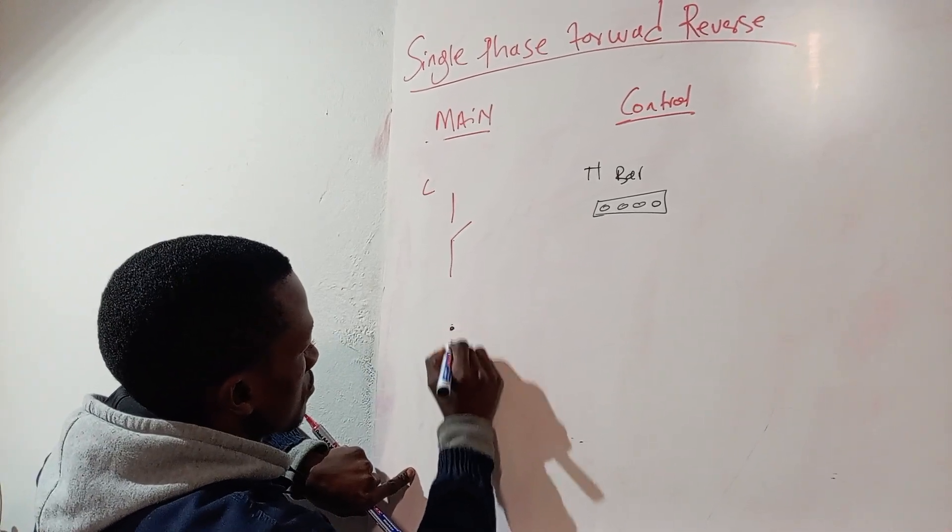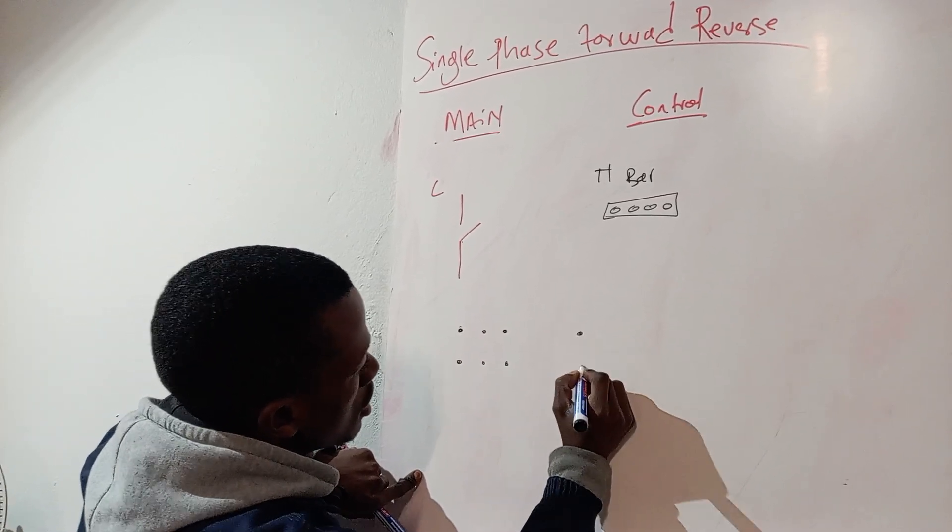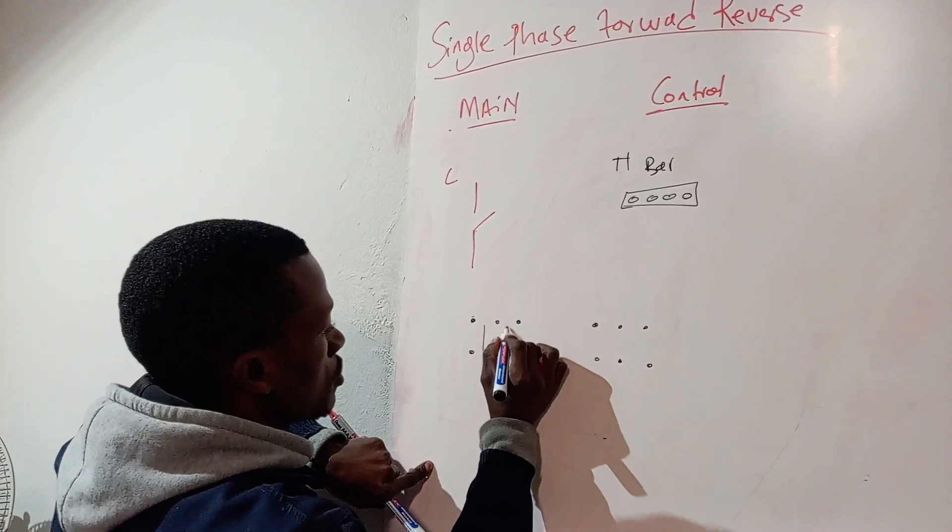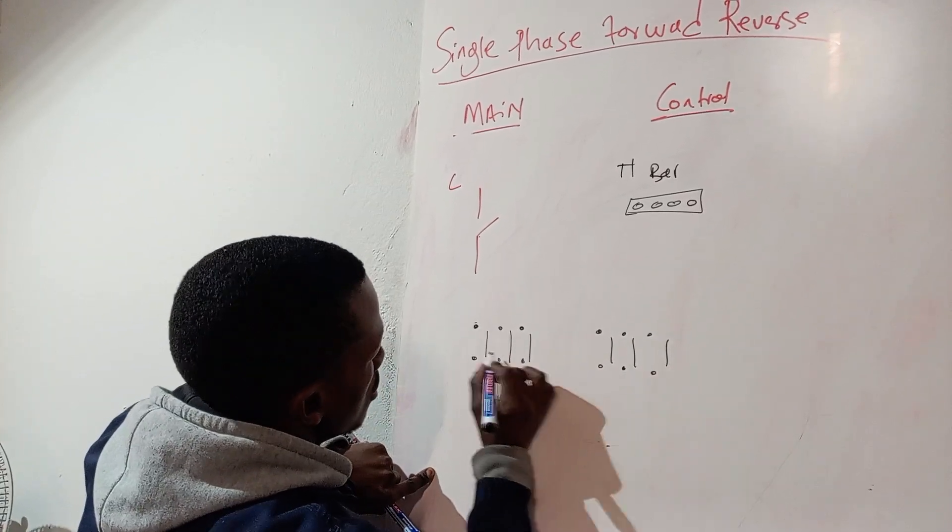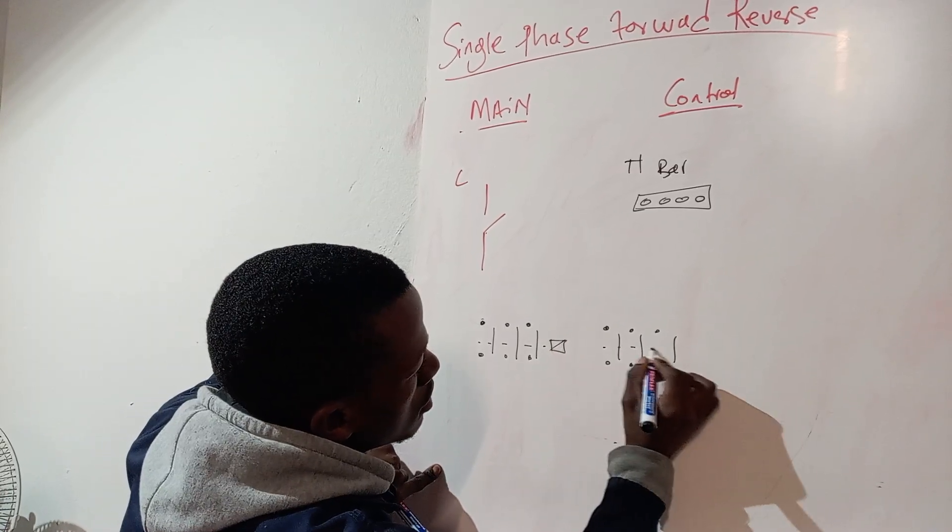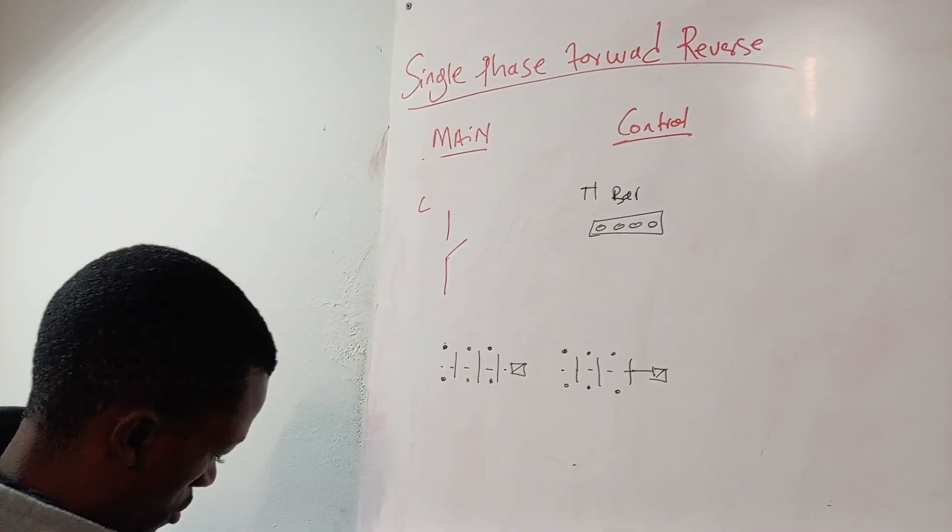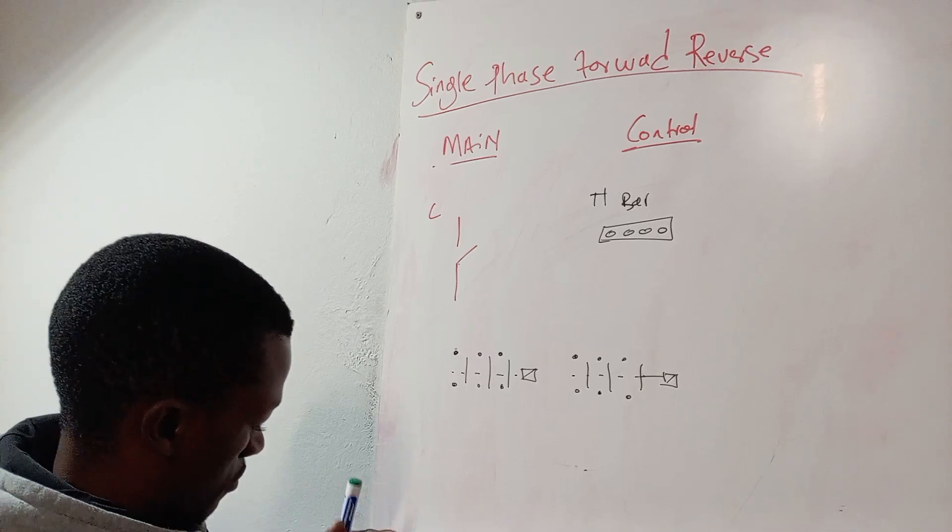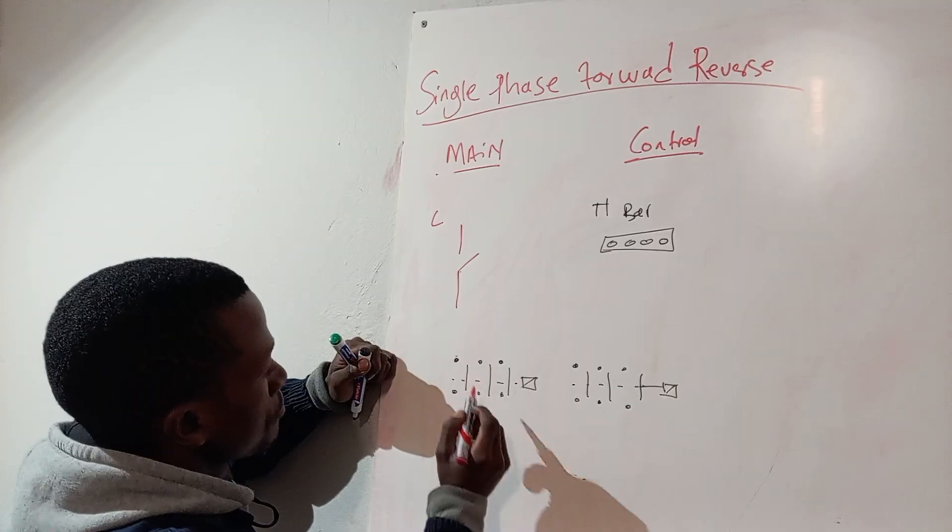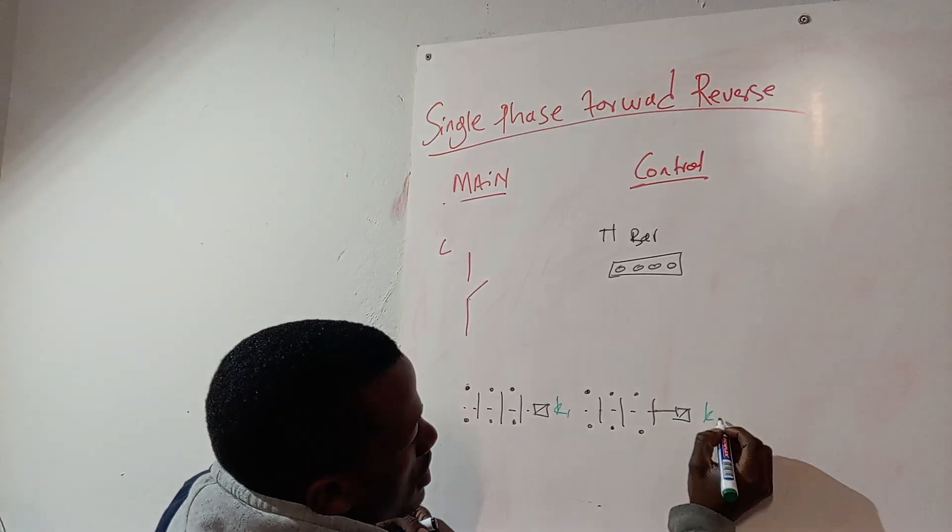So the first contactor is this side and then the second contactor is this side. I'm going to do it like this. So now your left hand side will be K1 and then your right hand side will be K2.